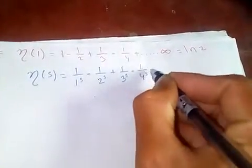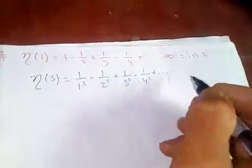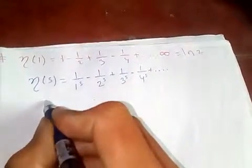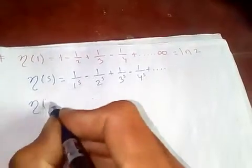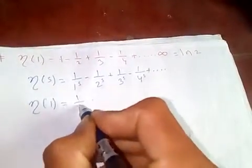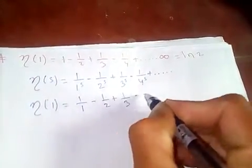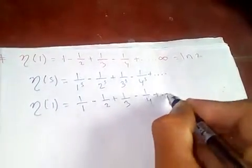Now when s is equal to 1, eta of 1 is going to be 1/1 - 1/2 + 1/3 - 1/4 + ... and so on.